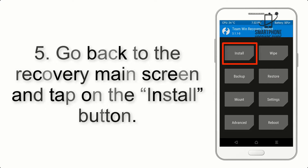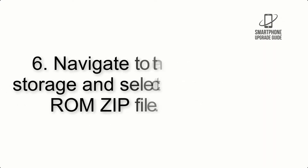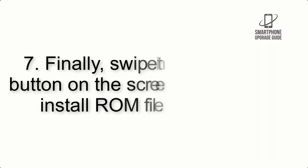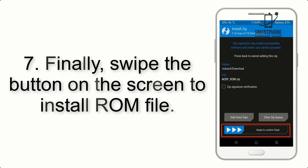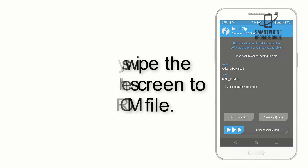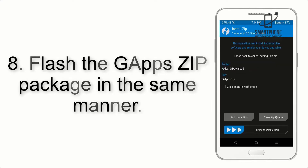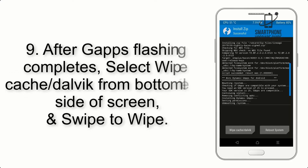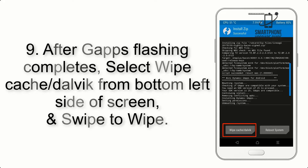Step 5: Go back to the recovery main screen and tap on the install button. Step 6: Navigate to the storage and select the ROM zip file. Step 7: Swipe the button on the screen to install the ROM file. Step 8: Flash the GApps zip package in the same manner.